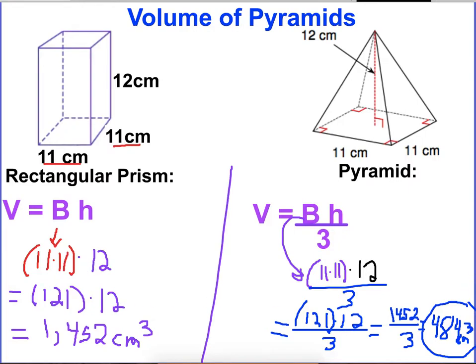So really similar. The only thing is this is a third of it. And that makes sense because if we go inside of this to make a pyramid, we're actually getting less volume, we're taking away part of it too. So it's going to be a third of that size. Let's see one more example of this too.